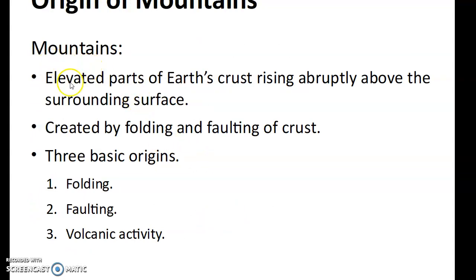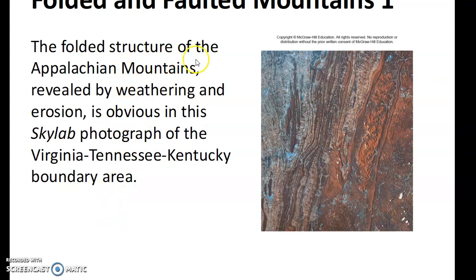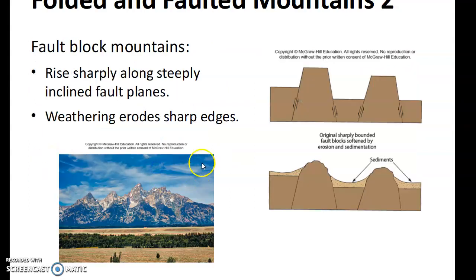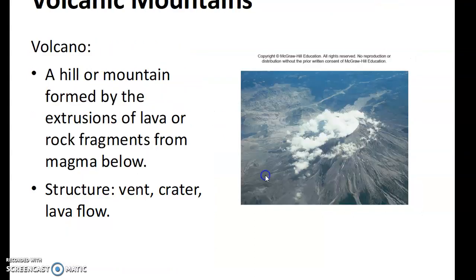Origins of mountains: mountains are elevated parts of the Earth's crust rising abruptly from the surrounding surface. There are three basic origins — folding, faulting, and volcanic activity. Folded and faulted mountains like the Appalachian Mountains are revealed by weathering and erosion, as seen in this photograph of the Virginia, Tennessee, Kentucky border. Folded and faulted mountains rise sharply along steeply inclined fault planes with very sharp edges from weathering. Volcanic mountains are a hill or mountain formed by extrusion of lava and rock fragments from magma below, featuring a vent, crater, and lava flow.